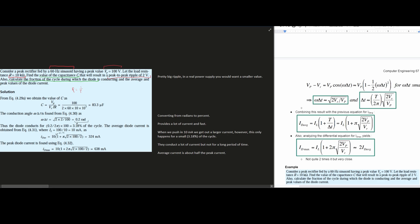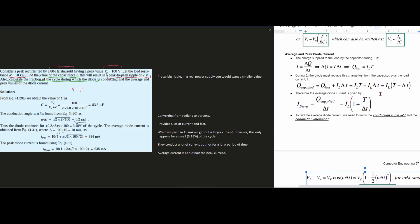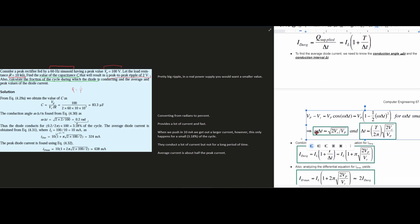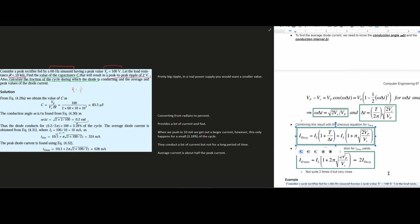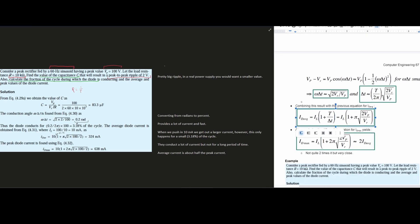Inside of it, we have our 1 plus, and then we have our pi. We're not going to write it like we have here, we're going to write it like we have here because we don't have T, we were given the frequency. We have our pi here and the square root, 2 Vp over Vr, which is familiar to what we had with our omega delta T. This is going to give us 324 milliamps.